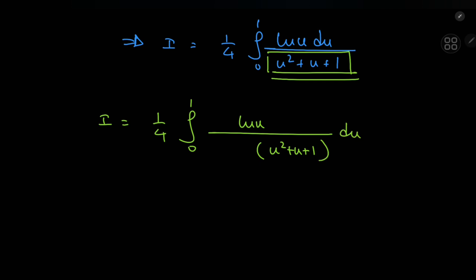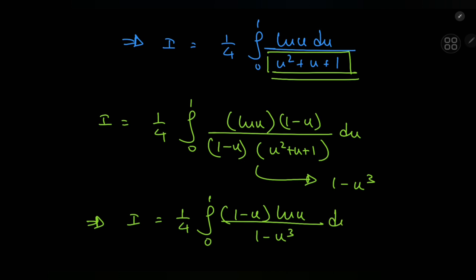And yes, that is an awkward amount of space I've left. But that awkward amount of space is to accommodate for a useful factor. That is 1 minus u. So expanding using 1 minus u, we immediately recognize that what you have in the denominator now is just 1 minus u cubed. So this implies that i equals a quarter of the integral from 0 to 1 of 1 minus u times log u divided by 1 minus u cubed du.